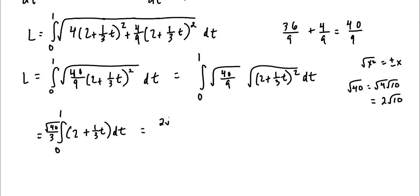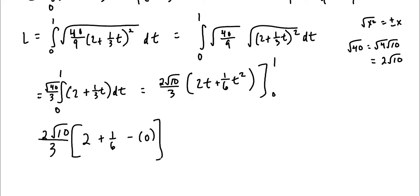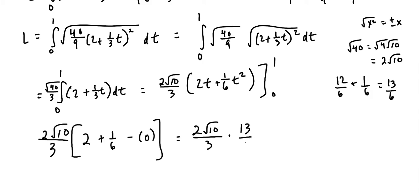Simplifying √(40/9): √9 = 3, and √40 = √4·√10 = 2√10, so the coefficient is 2√10/3. The integral from 0 to 1 of (2 + t/3) dt gives antiderivative 2t + t²/6, evaluated from 0 to 1. Plugging in 1: 2 + 1/6 = 12/6 + 1/6 = 13/6. So the length is (2√10/3)·(13/6) = 26√10/18 = 13√10/9.